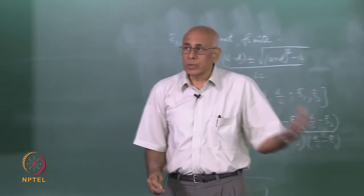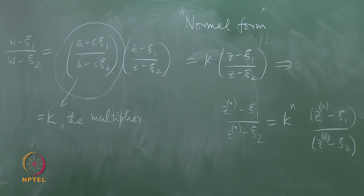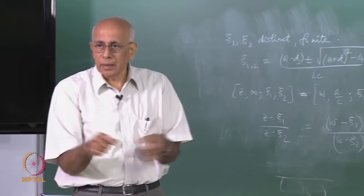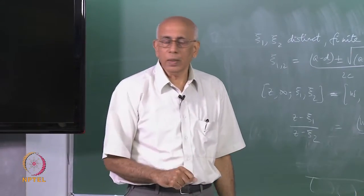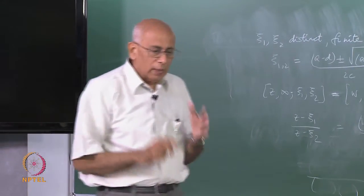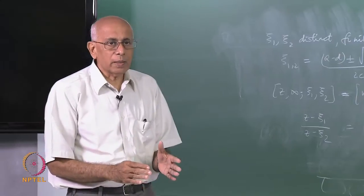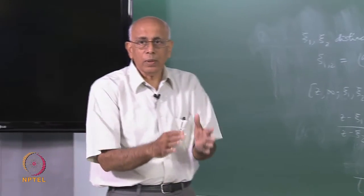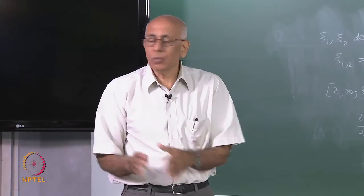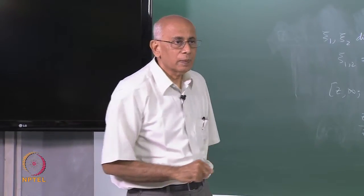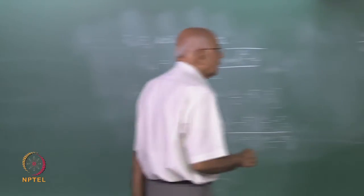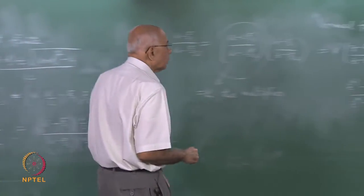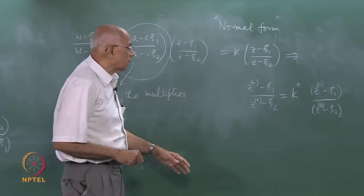You can see why, instead of specifying a transformation by the coefficients a, b, c, d with ad minus bc equal to one, you should really specify it by stating what z_i1 and z_i2 are, and what the multiplier k is. These three together completely determine the transformation.